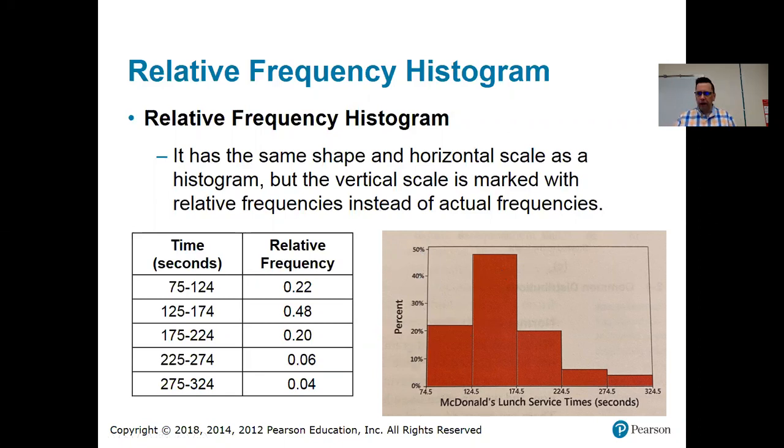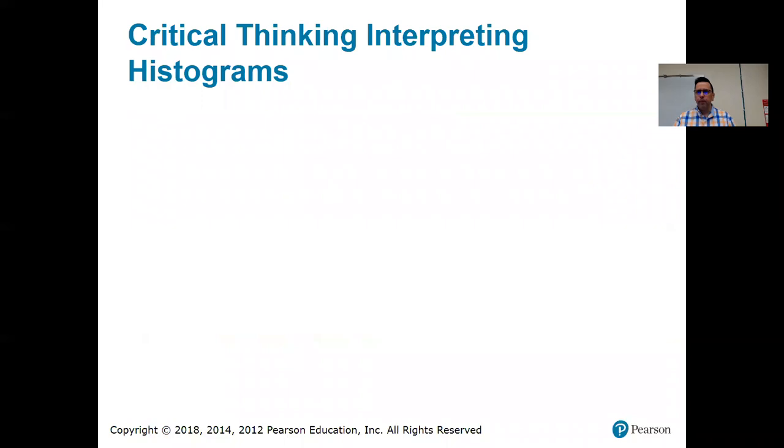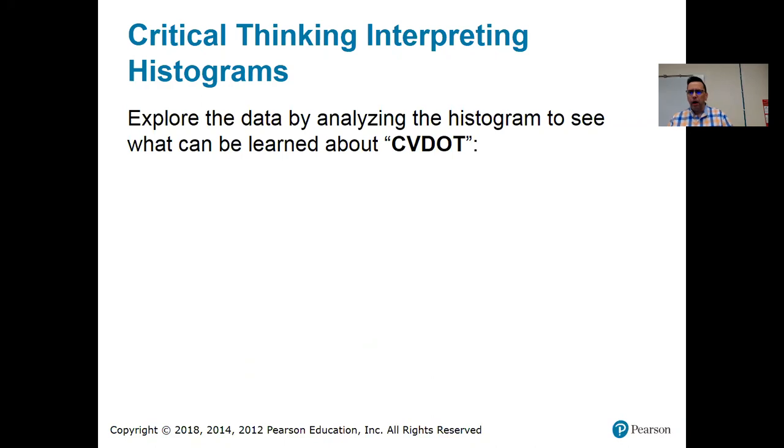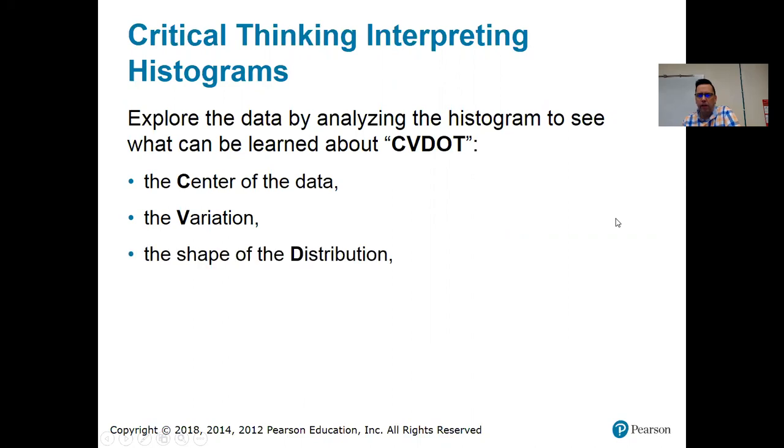All right. Moving right along. Critical thinking interpreting histograms. So, they suggest this. They've got this little anagram here, CVDOT. I guess they think that's going to make these things easier to remember. Maybe it will. So, C stands for center. V is variation. So, that's another word for spread. How spread out is the data. The shape of the distribution. Whether there are any outliers.